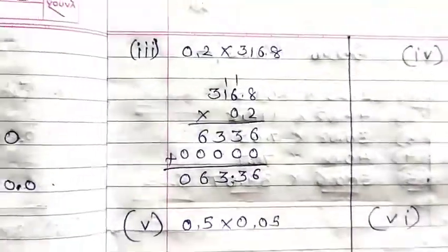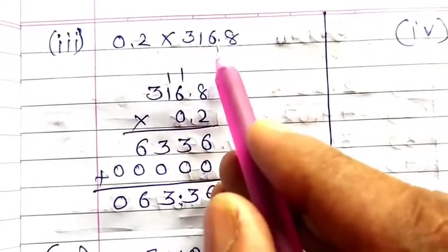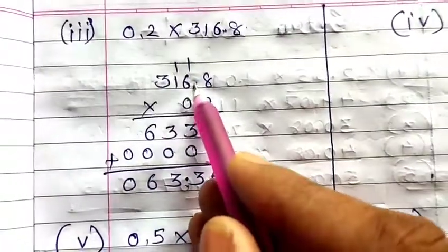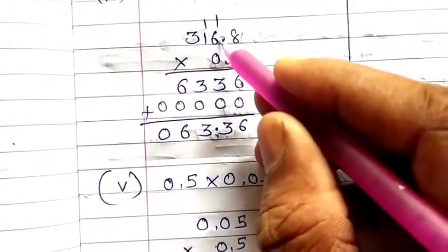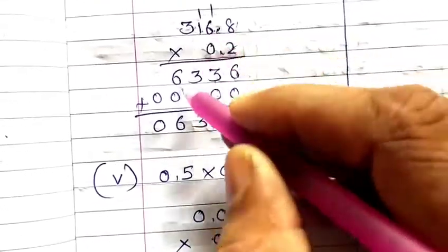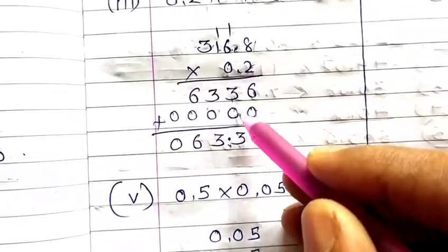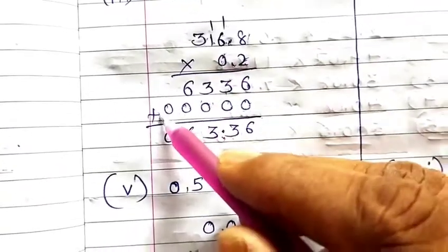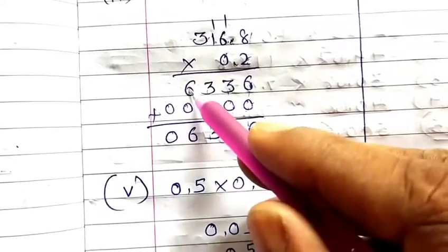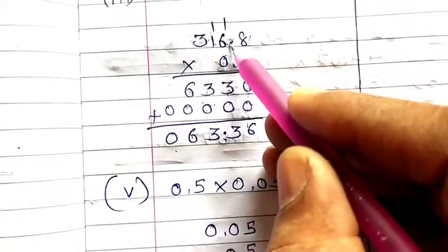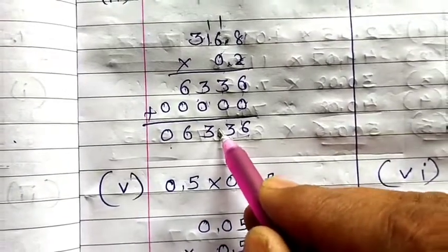Then 0.2 multiplied by 316.8. 2 eights are 16, carry 1; 2 sixes are 12 plus 1 is 13, carry 1; 2 ones are 2 plus 1 is 3; 2 threes are 6. Place a zero, then multiply 0 by all digits to get 0. Sum is 6336. After the decimal: one digit in 316.8 and one in 0.2, total 2. Leave 2 digits from the last and place your decimal — answer is 63.36.